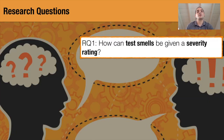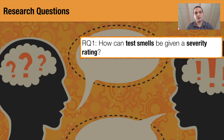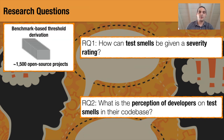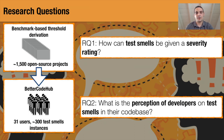First, we investigate how to give test smells a severity rating. Our aim here is to decrease false positives and make prioritization possible. Then, with these new thresholds, we rerun the study using Better Code Up and ask developers' opinion on test smell instances found in their own code. For the first research question, to find new thresholds, we use the benchmark-based threshold derivation for each test smell. For the second research question, we run a study using Better Code Up and its users.